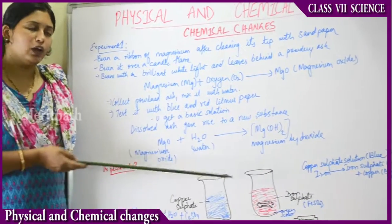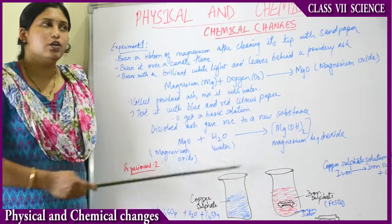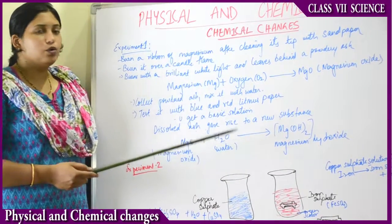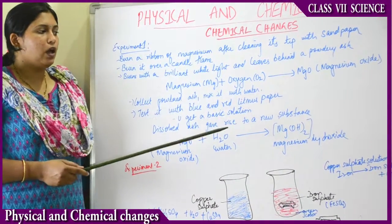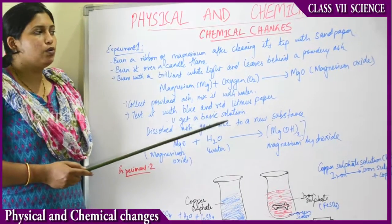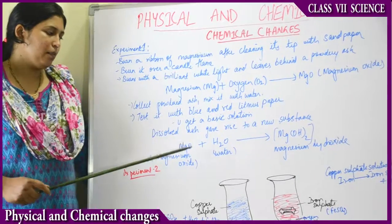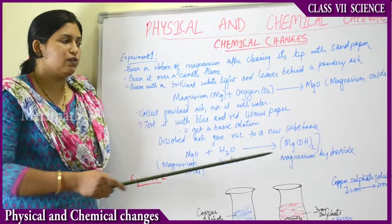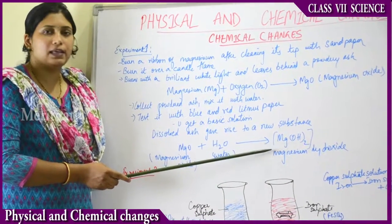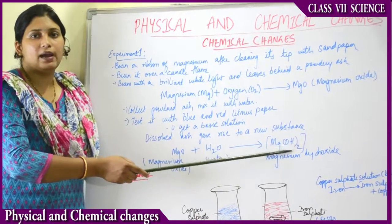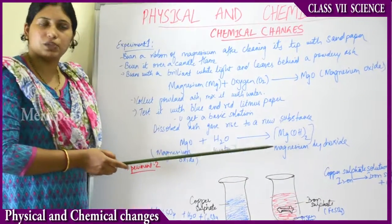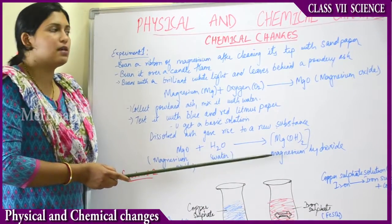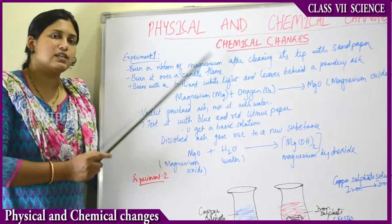As a result of this experiment, we have got new substances and those are basic in nature. This is a chemical change in which a new substance was formed along with a new nature of the substance. When magnesium oxide was mixed with water, we received a new substance called magnesium hydroxide, which is a base. Any substance having OH in its formula at the end is always a base. You can also test it with red or blue litmus paper — it is a basic solution. This is a new substance formed, so this is a chemical reaction.